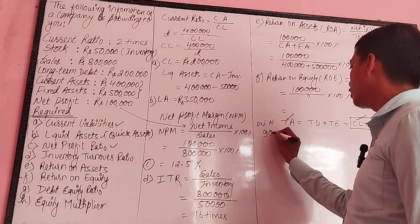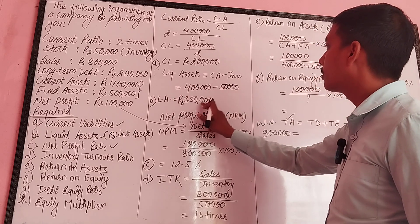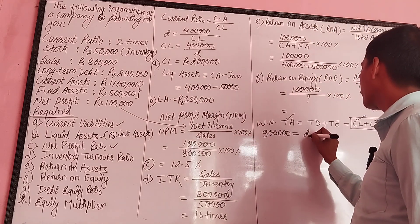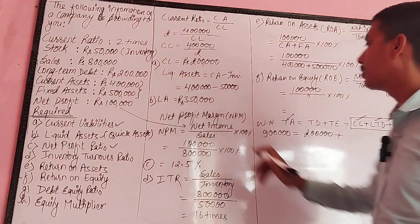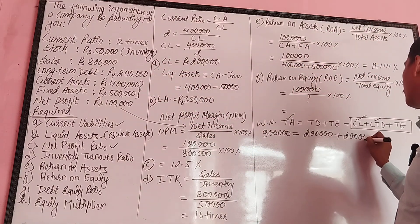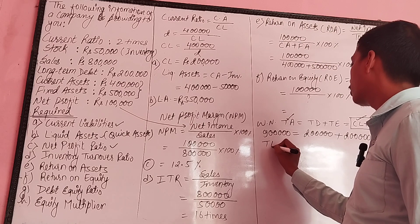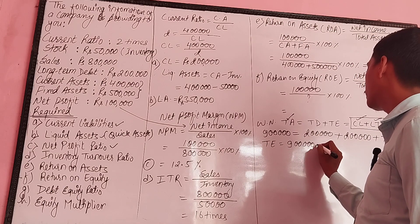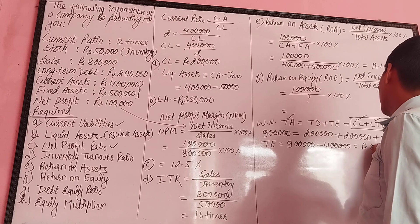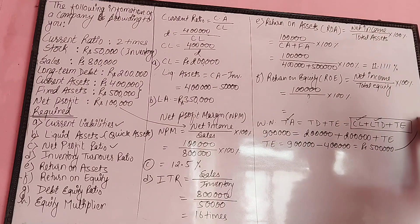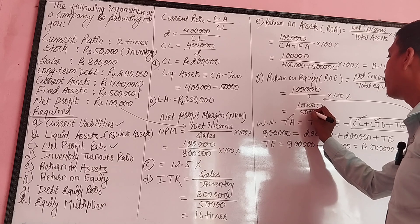Total assets are 9 lakh. Current liability, which we have calculated, is 2 lakh. Plus long-term debt from the question is 2 lakh. Total debt equals 2 lakh plus 2 lakh equals 4 lakh. Total equity equals total assets minus total liabilities: 9 lakh minus 4 lakh equals 5 lakh. Net income 1 lakh divided by total equity 5 lakh.